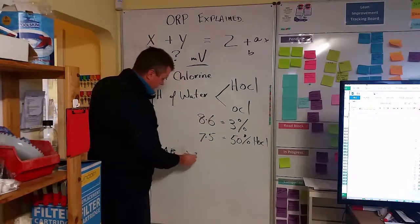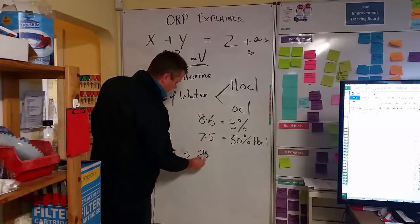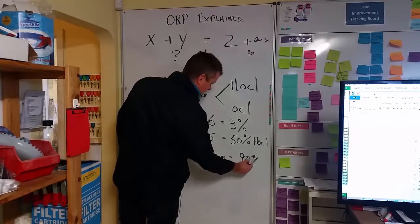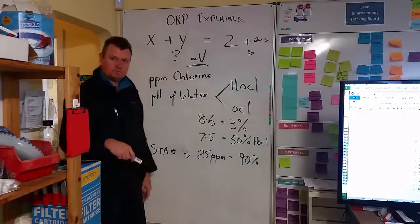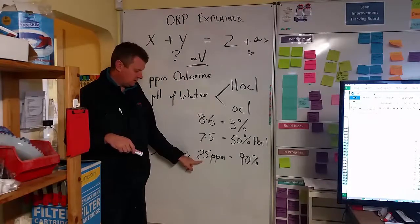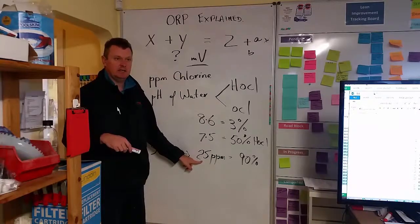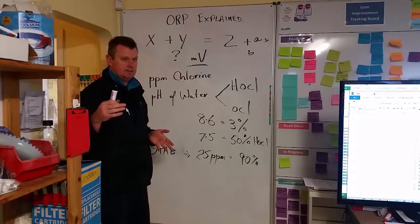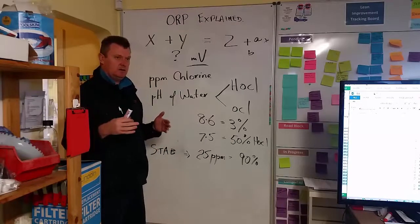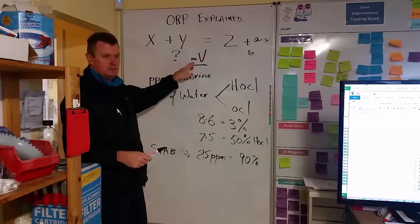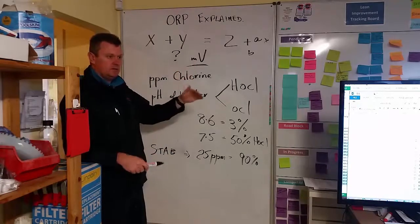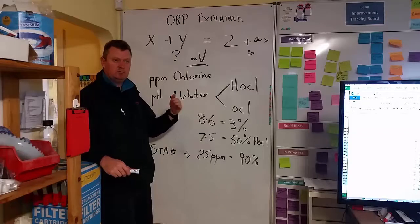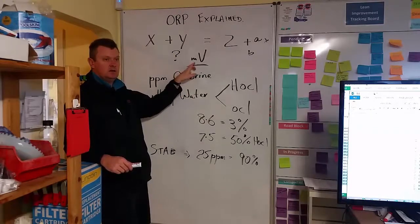So with stabiliser, another thing you might not be aware of, 25 ppm stabiliser is equal to 90% protection of your chlorine. So the minimum we look at is 30, which is I think 95%. And then 30 to 70, 70 is the maximum. That's still only getting up to 98% protection.